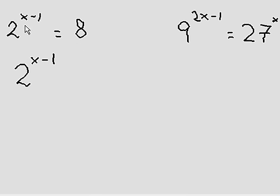So the first one, 2 to the power of x minus 1 equals 8. Okay, well, if we recognize that 8 is actually 2 to the power of 3, that makes things a lot easier.